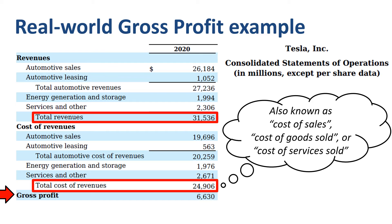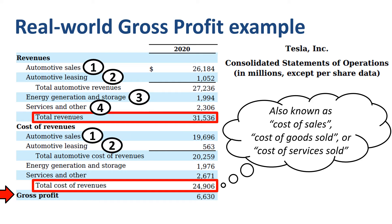Because Tesla identifies four types of revenue — automotive sales, automotive leasing, energy generation and storage, and service and other — there are also four corresponding types of cost of revenue. When we review Tesla's annual report, we will find detailed descriptions explaining each of these lines.